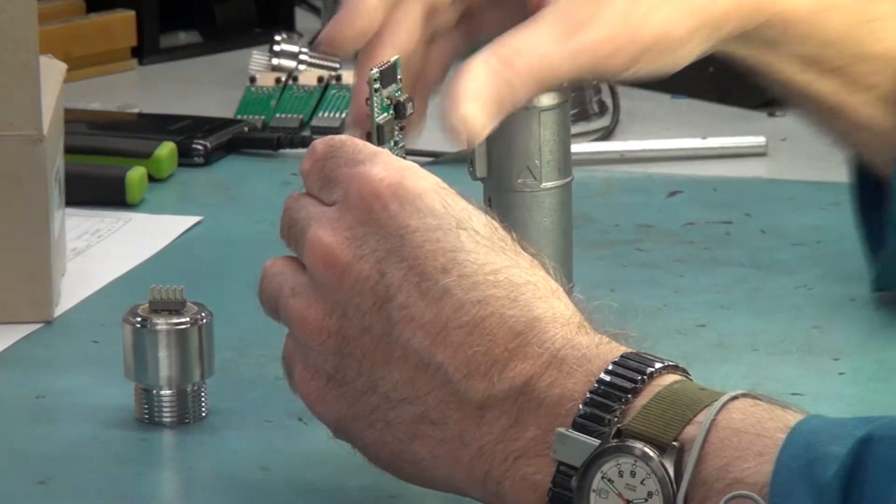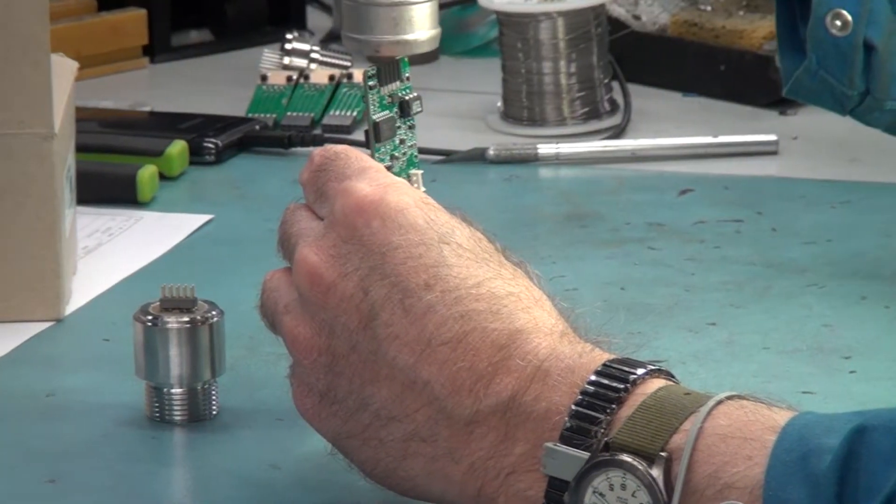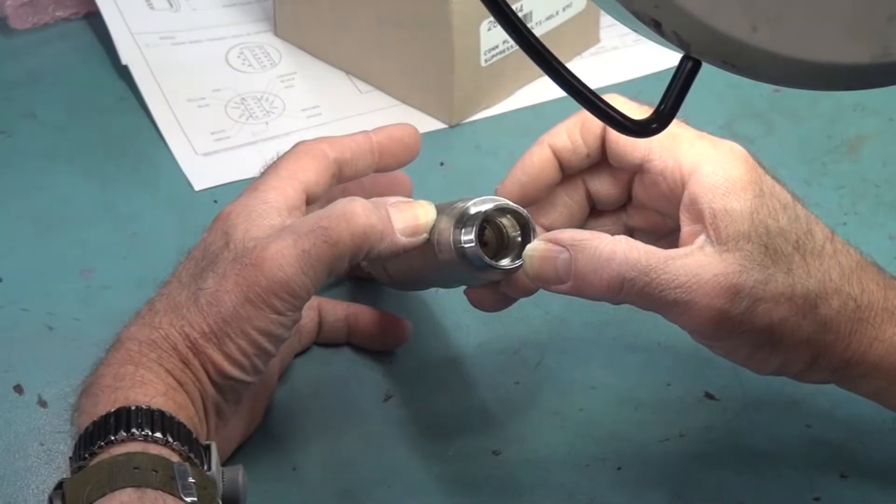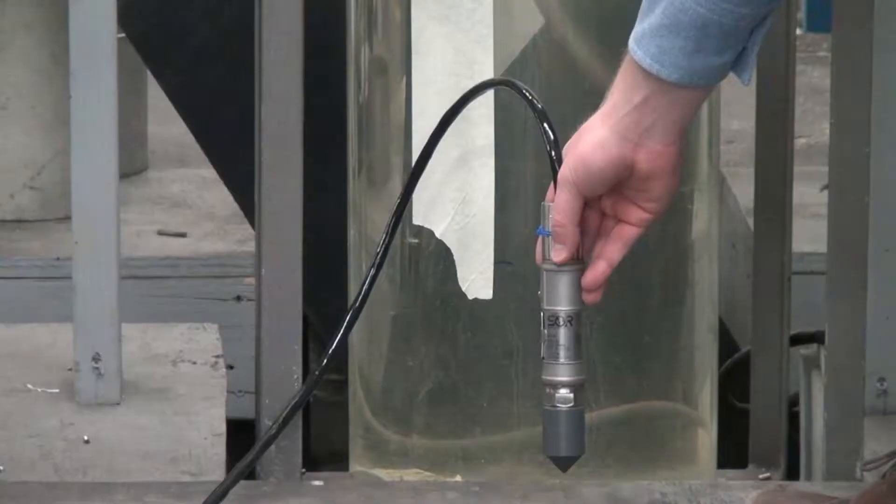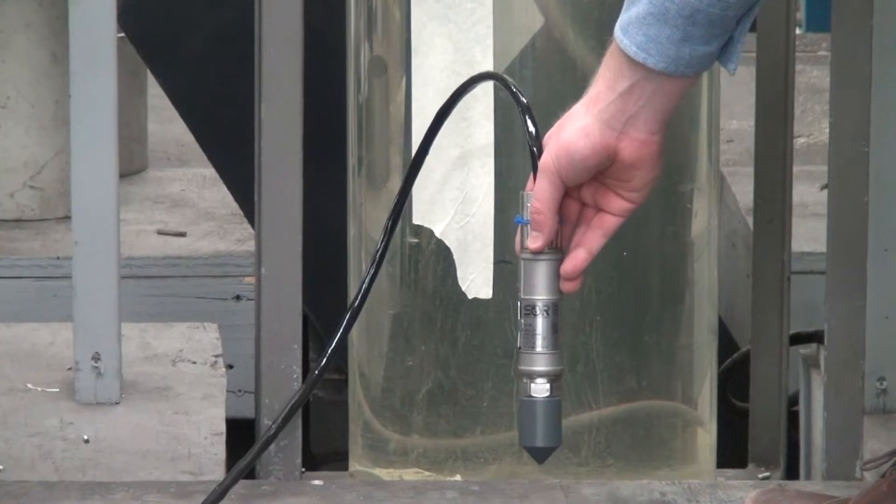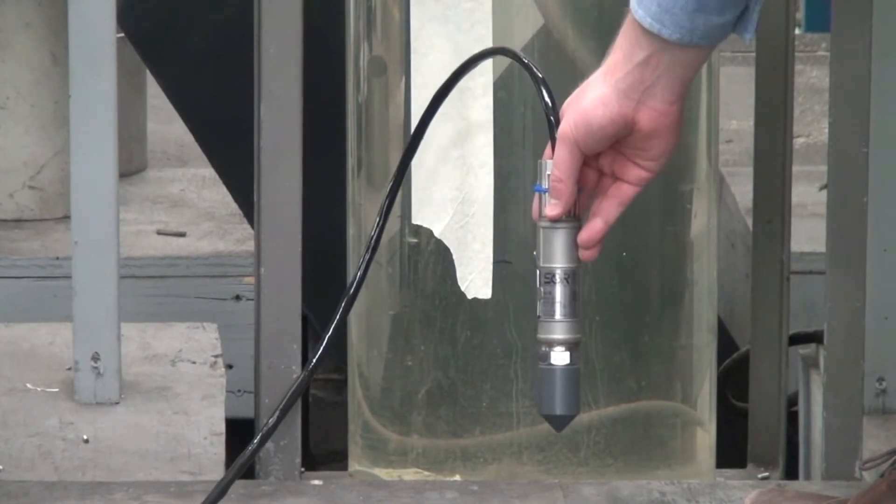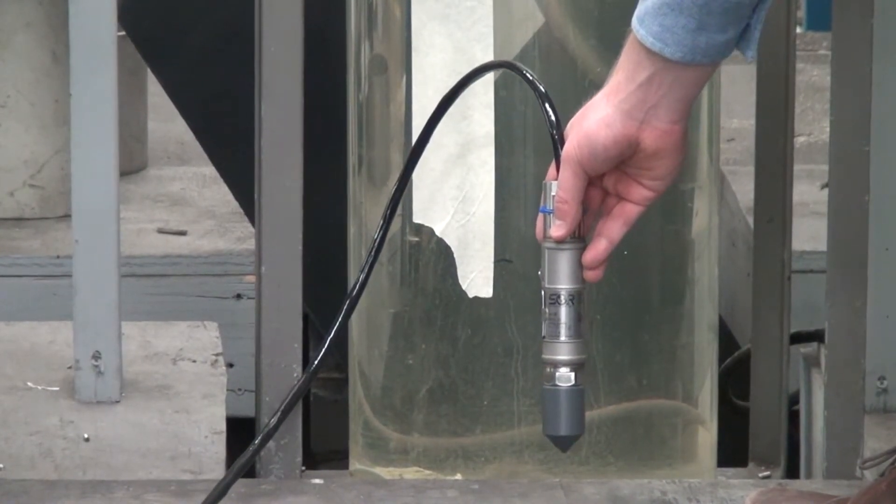The 815LT submersible level transmitter is actually just a pressure transmitter. The way it works is it just measures the hydrostatic pressure at the bottom of the tank. The point at which the level transmitter is at the bottom of the tank, that is the max height of the liquid level that you can measure.